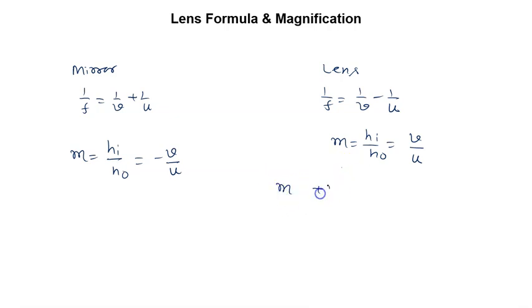If m is plus 1, plus 1 means virtual, erect, 1 means same size. m is minus 1, minus means real, inverted, 1 means same size.